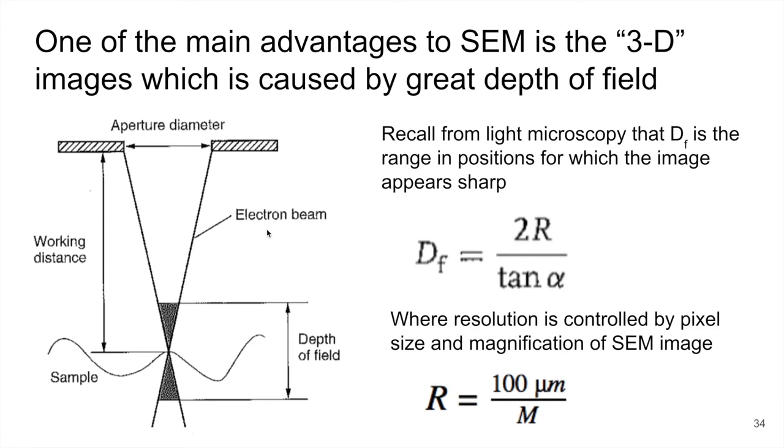So this actually comes from what we talked about in light microscopy, the depth of field equation. So the same thing here as what you've seen before. So we have depth of field equals two times the resolution and then over tangent of the convergence angle here. And again, that's the angle with this beam converging down to the sample out of the aperture.